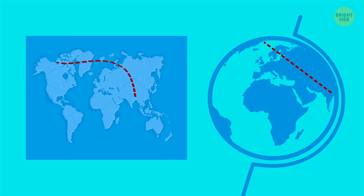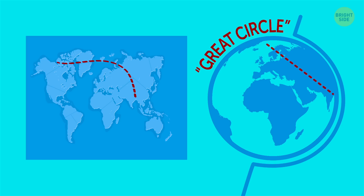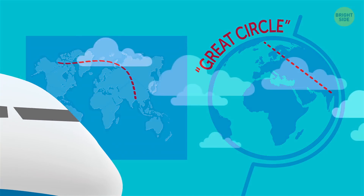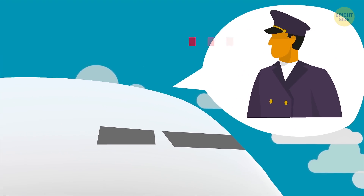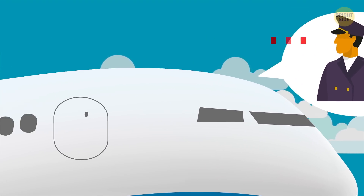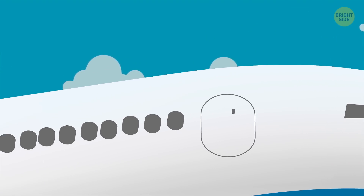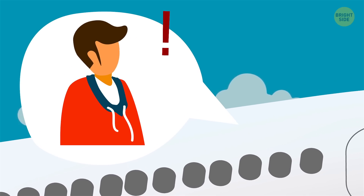These straight flight paths that look curved on a map are ironically known as Great Circle routes. They account for the curvature of the Earth. So what may look like an unnecessary detour over Canada's East Coast when you're looking at a flat map is the shortest path when flying. Okay, sorry Captain, now I get it.